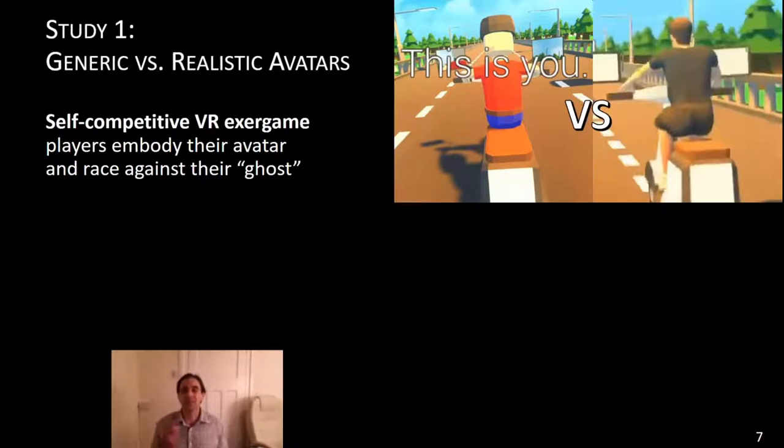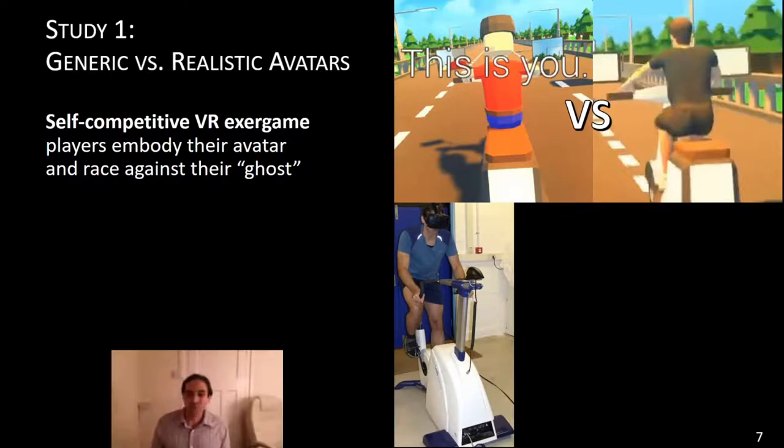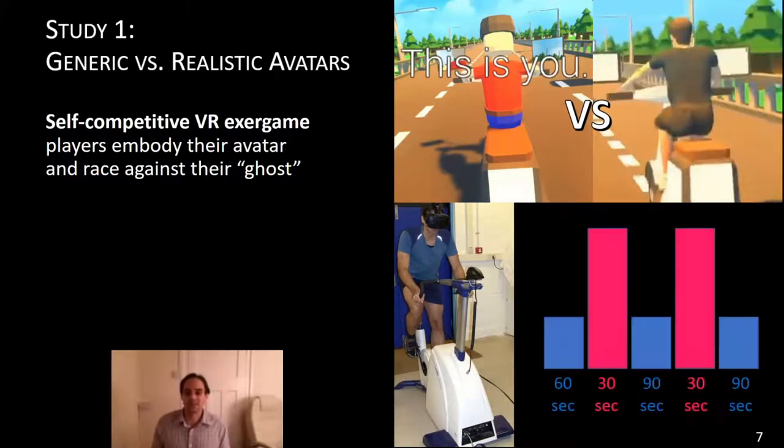For that reason, we were using a self-competitive VR exergame. In this self-competitive cycling based VR exergame, people embody their own avatar. They can look down onto their own avatar, they can see their avatar in these wing mirrors that are attached to their bike. But they also race against a ghost, against their own ghost. That is, they see their own avatar racing against them, representing one of their previous races. So they can properly see themselves, at least from the back or from the front in their wing mirror.